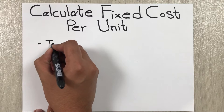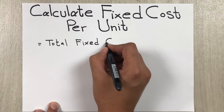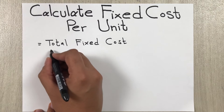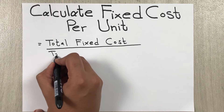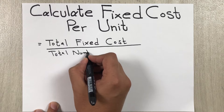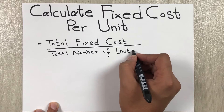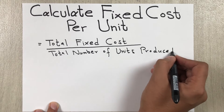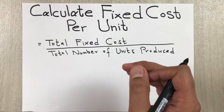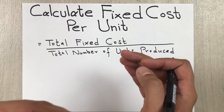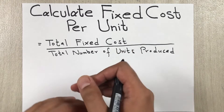Fixed costs do not change based on production or sales. Examples of fixed costs are rent, insurance, utilities, and machinery — these are all fixed costs.